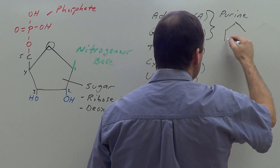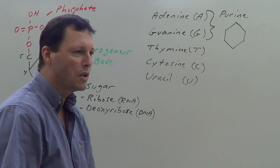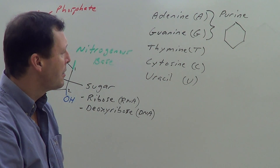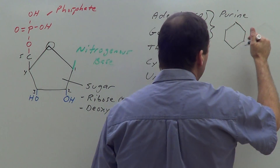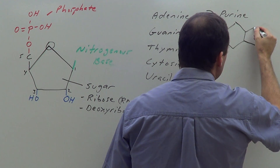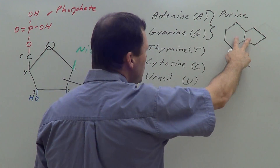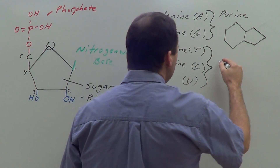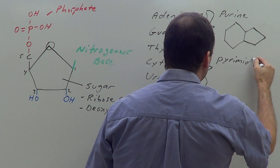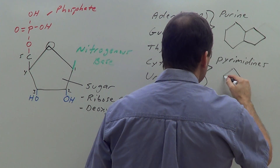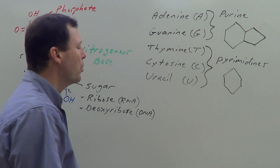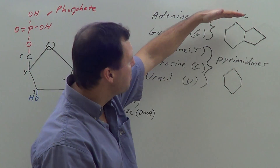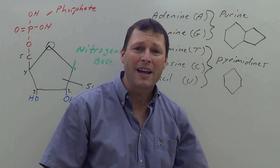Adenine and guanine are referred to as purines because they're made of two fused rings — one six-membered ring and one five-membered ring, with carbons and nitrogens at the corners. Thymine, cytosine, and uracil are pyrimidines — they consist of a single hexagonal ring, again with carbons and nitrogens at the corners.